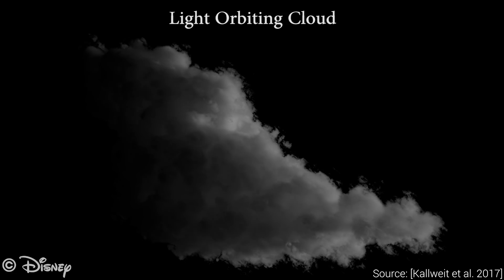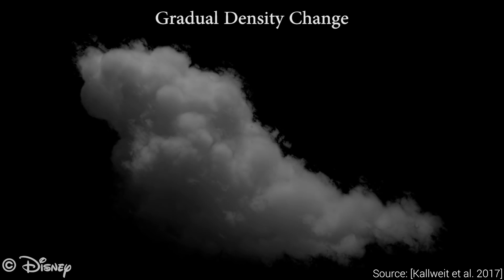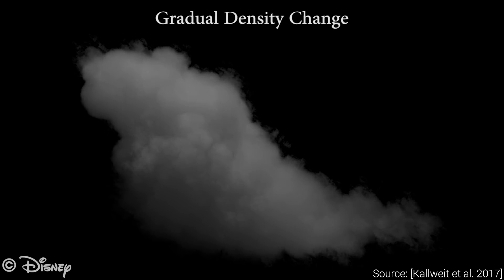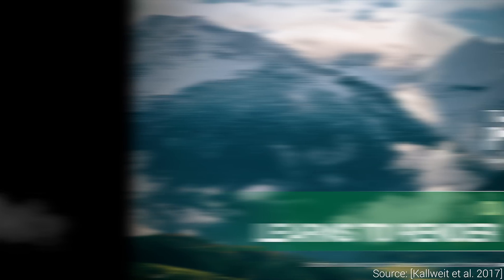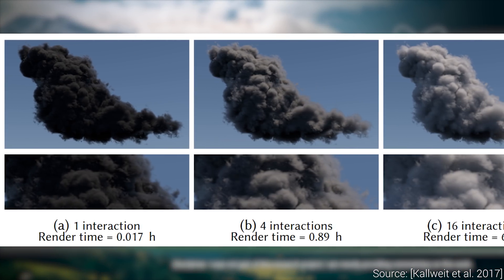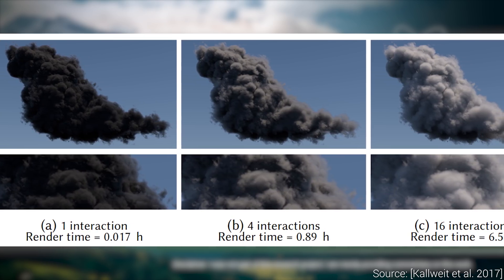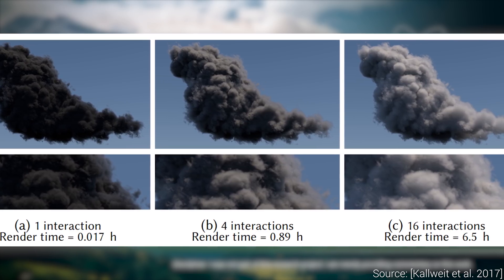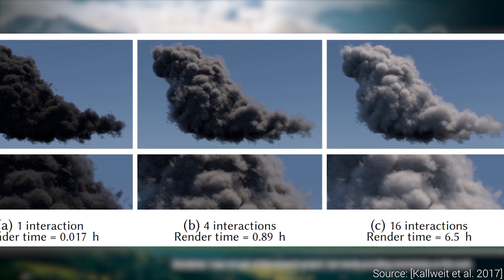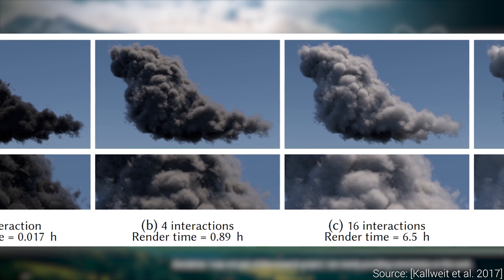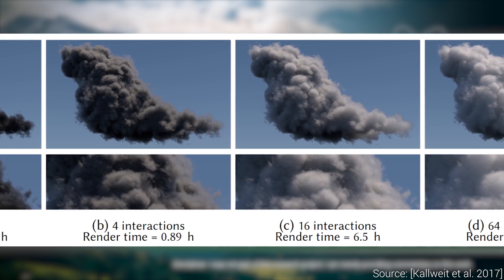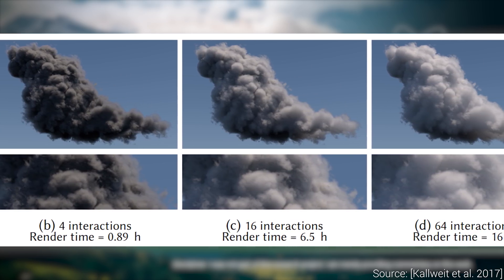However, we have to simulate millions and millions of light paths with potentially hundreds of scattering events, which is a computationally demanding task even in the age of rapidly improving hardware. As you can see here, the more we bump up the number of possible simulated scattering events, the closer we get to reality, but the longer it takes to render an image. In the case of bright clouds, rendering an image like this can take up to 30 hours.